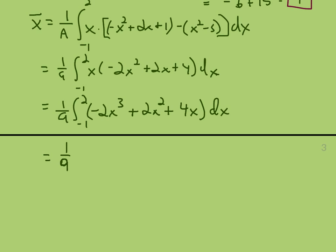We get a ninth. We get negative x fourth over 2 plus 2x cubed over 3 and then 2x squared, once again from negative 1 to 2. So let's be careful. We put the 2 in. We get negative 8 plus 16 over 3 plus 8.